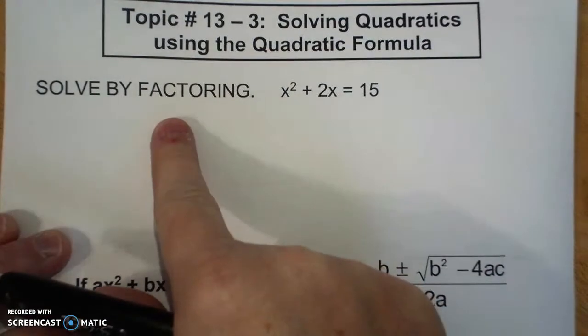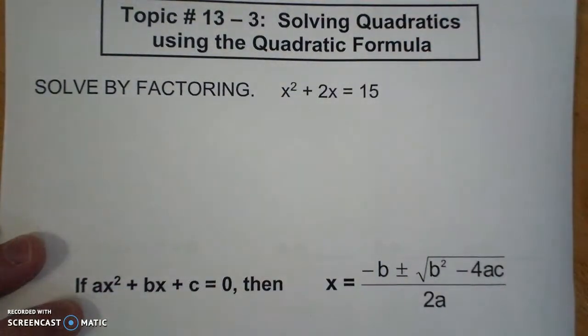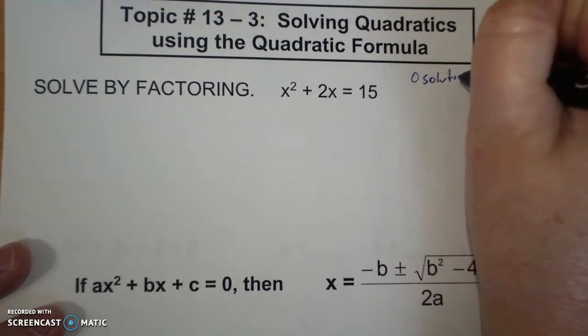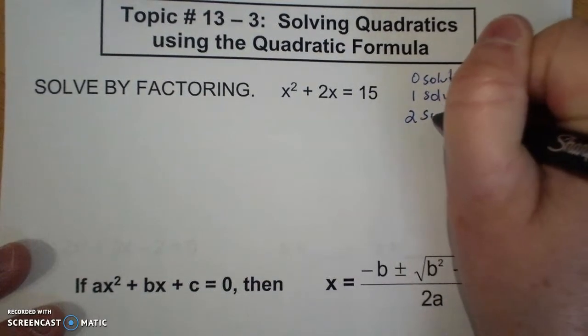We're going to go back and solve by factoring. And remember when there is an x squared, you can have zero solutions, one solution, or two solutions.